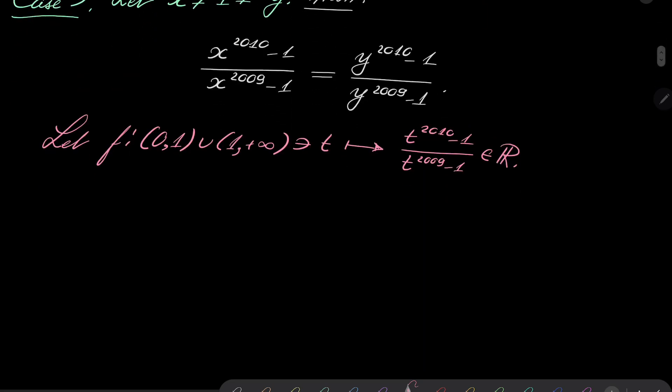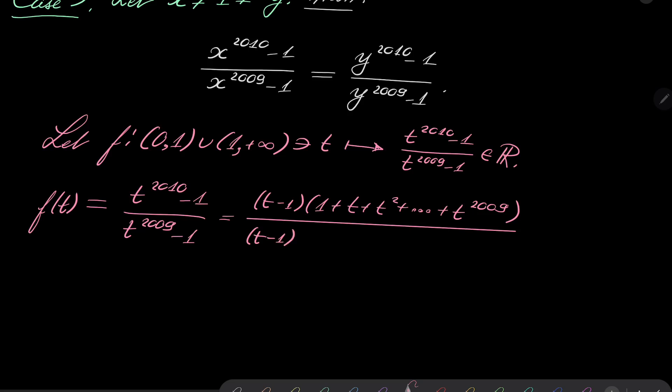First, I claim that the limit at t equals 1 exists. To show that, notice that our function can be rewritten as: t minus 1 times (1 + t + t^2 + ... + t^2009) all over t minus 1 times (1 + t + t^2 + ... + t^2008).